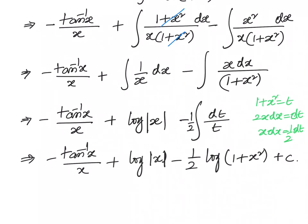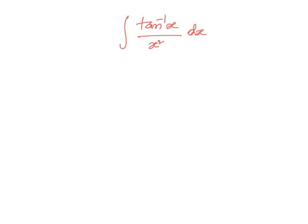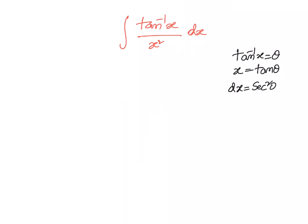We will also solve it using trigonometric substitution. For the integral of tan inverse x by x square dx, we take x equal to tan theta. Then tan inverse x equals theta, and differentiating gives dx equals secant square theta d theta. Converting everything: tan inverse x is theta, dx is secant square theta d theta, and x square is tan square theta.